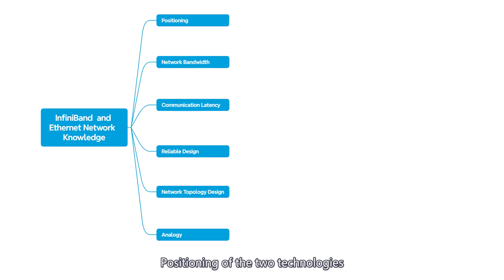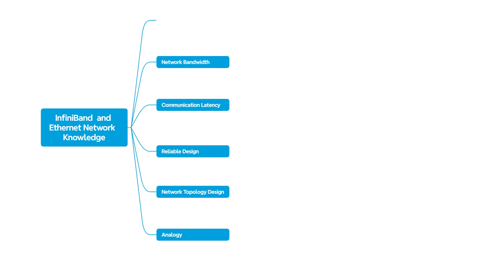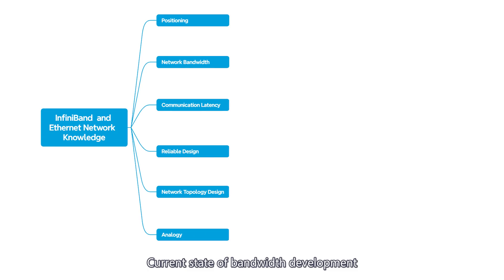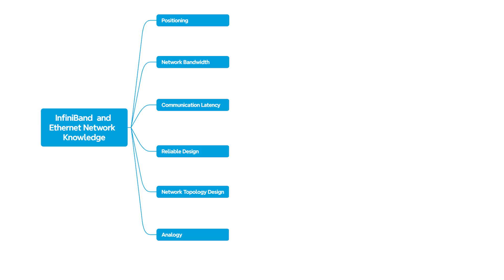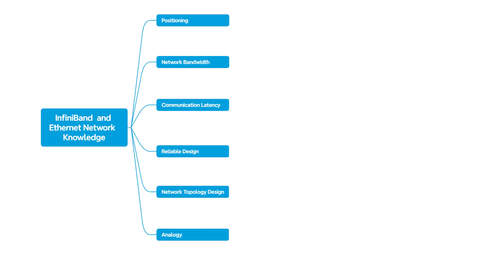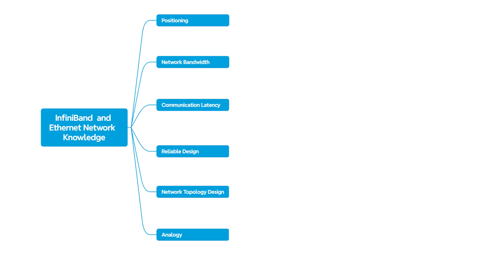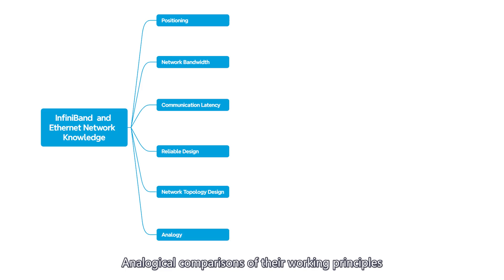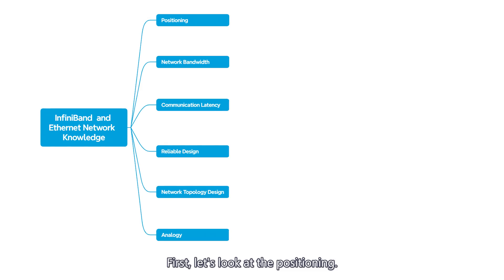The five key aspects are: positioning of the two technologies, current state of bandwidth development, communication latency and advantages, reliability design differences, and network topology design, along with analogical comparisons of their working principles.